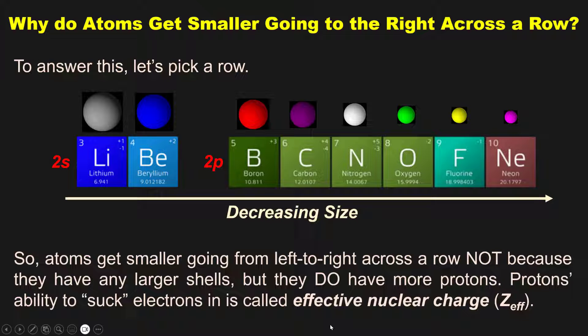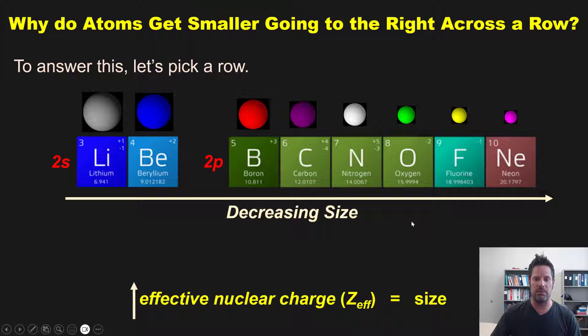Atoms get smaller going left to right across a row not because they have larger shells or orbitals, but because they have more protons. Protons in the nucleus actually suck electrons in because each additional proton gives the atom a greater effective nuclear charge, or z effective, that we discussed in our previous video. As z effective goes up, size of an atom goes down.